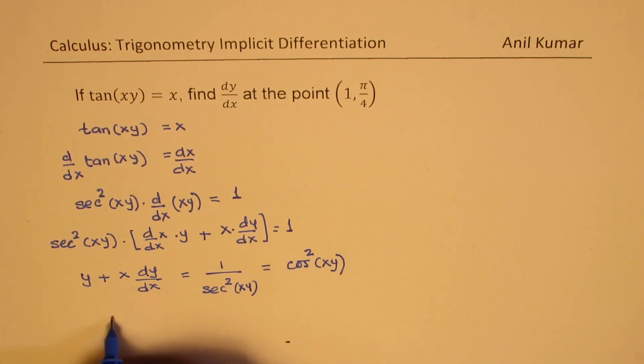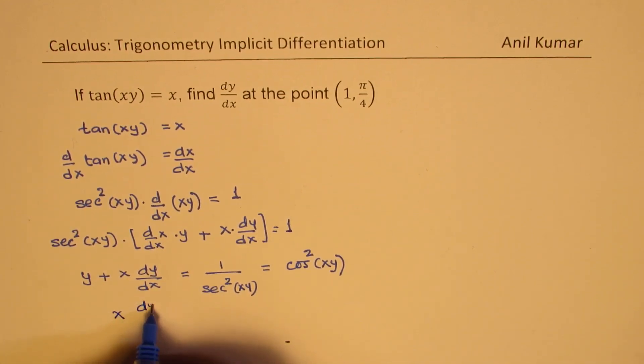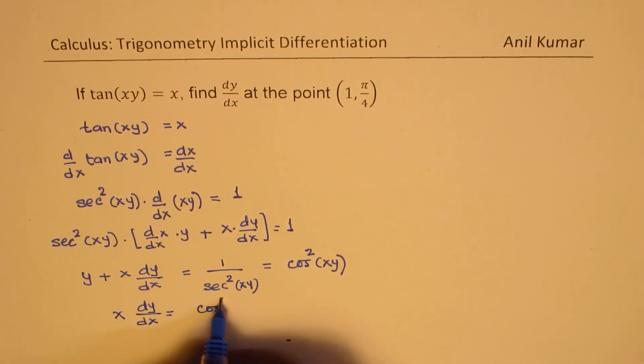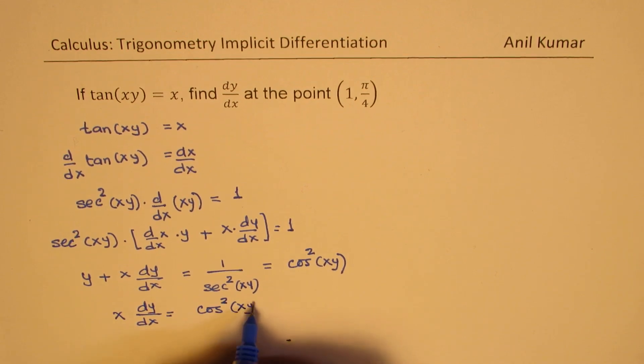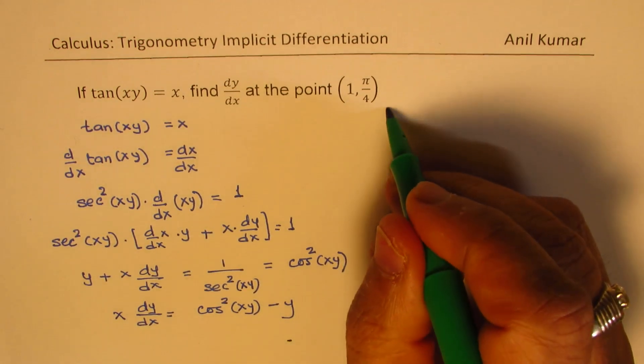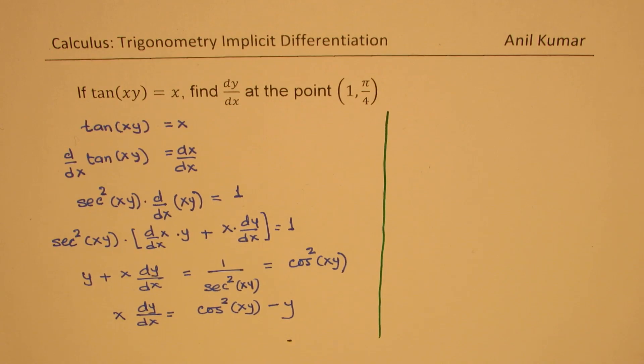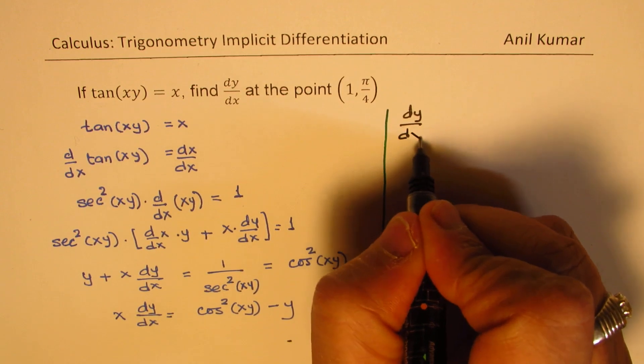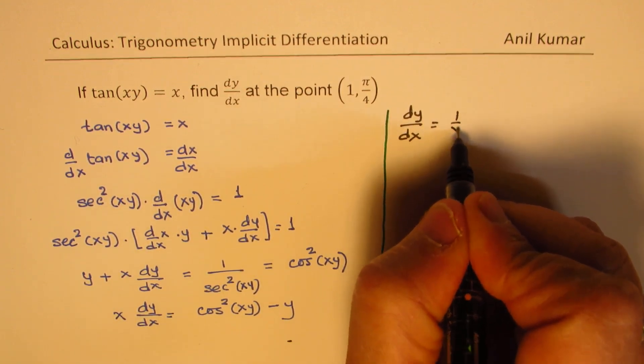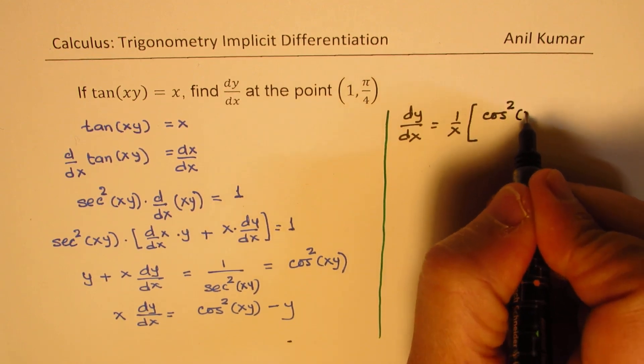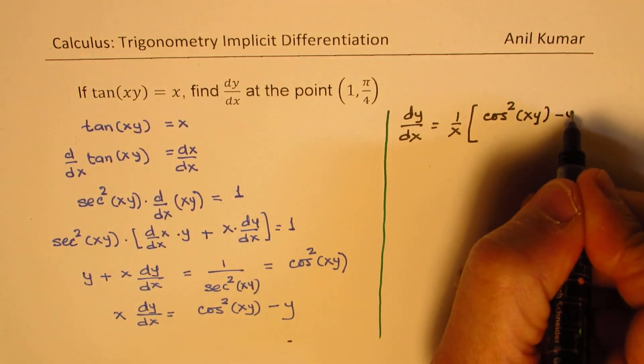We get x dy/dx equal to cos²(xy) minus y. Let me take it to the right side, and then find the derivative. So, dy/dx is equal to 1 over x times [cos²(xy) minus y].